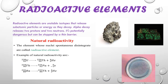Radioactive elements are unstable isotopes that release subatomic particles or energy as they decay. Alpha decay releases two protons and two neutrons. It is potentially dangerous but can be stopped by a thin barrier.